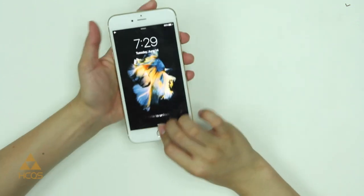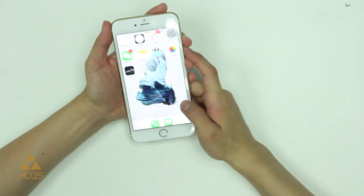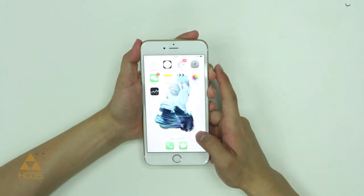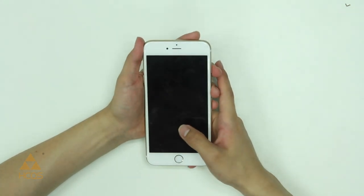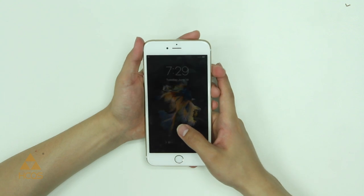From here, we're going to test functionality of the screen, including the pressure sensitivity and make sure that everything is working properly. We have no dead pixels and no dead areas where the digitizer is not functioning.